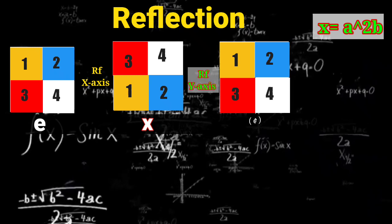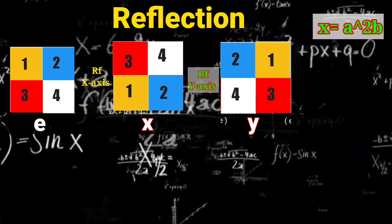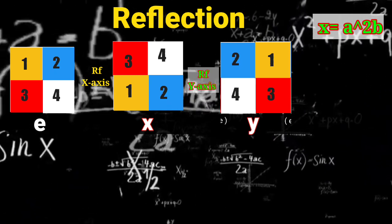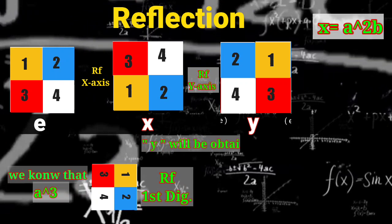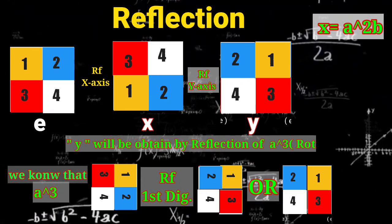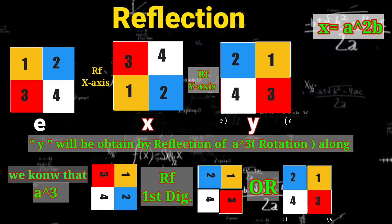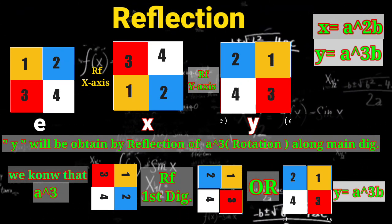Reflection along the y-axis: Y will be obtained by reflection of A³ along the main diagonal. So y equals A³B.